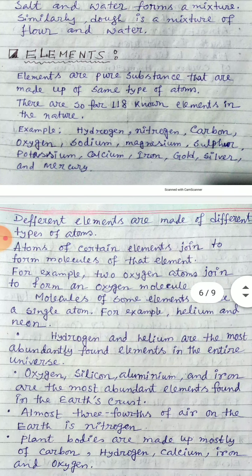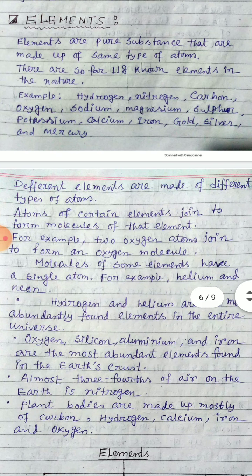What is an element? Elements are pure substances that are made up of the same type of atoms. There are 118 known elements so far, out of which 92 are naturally occurring and the rest are manmade in the laboratory. Examples of elements are hydrogen, nitrogen, oxygen, carbon, sodium, magnesium, sulfur, potassium, calcium, iron, gold, silver, and mercury.